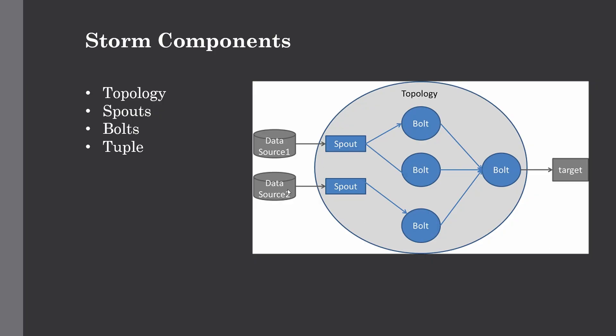As you can see, spouts accept data from different data sources and pass the data to bolts, which then convert it into an output stream. Bolts can perform various operations like aggregation and joining, and we can also interact with data sources and databases. Then comes the tuple. The tuple is the main data structure in Storm — it is nothing but a list of ordered elements. By default, tuples support all data types and are generally modeled as a set of comma-separated values.